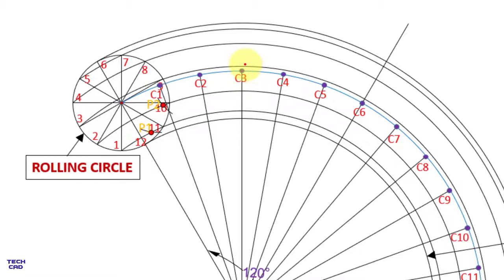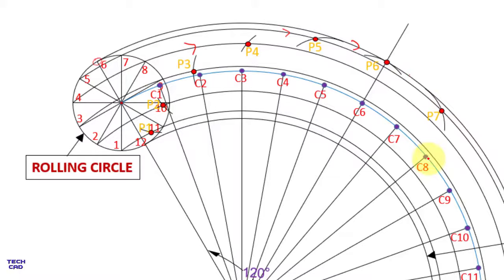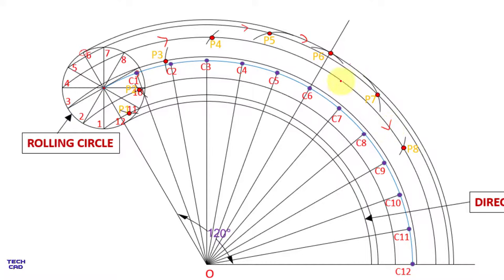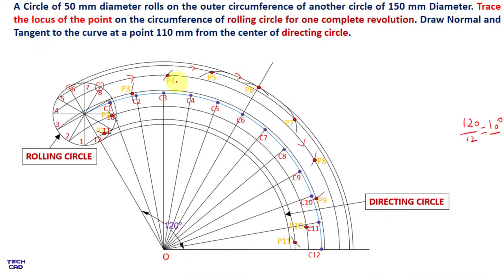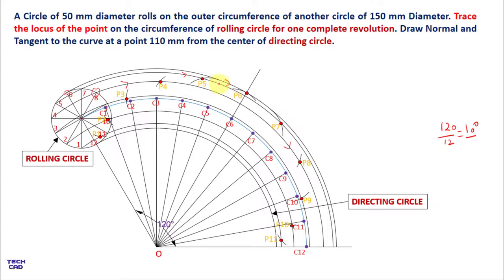In the same way, from C3 mark an arc for point P3; from C4 for P4; from C5 for P5; from C6 for P6; from C7 for P7; from C8 for P8; and similarly C9, C10, and C11. We now have all the points of the epicycloid. Join these points freehand to complete the epicycloid curve.